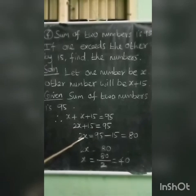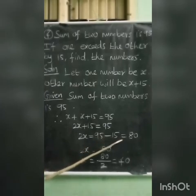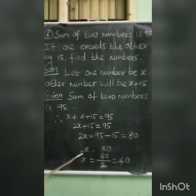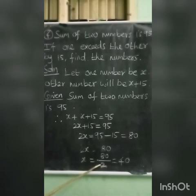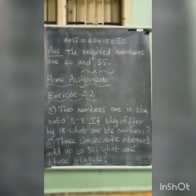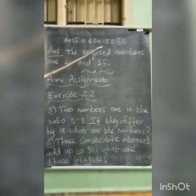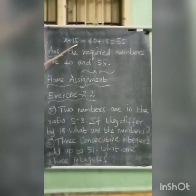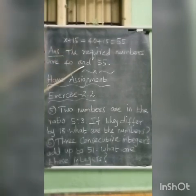Transposing 15 to the right-hand side: 2x equals 95 minus 15, which equals 80. Then 2x equals 80. Dividing both sides by 2, we get x equals 40. Then x plus 15 equals 40 plus 15, which equals 55. The required numbers are 40 and 55.